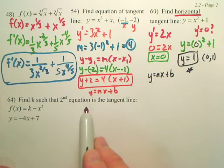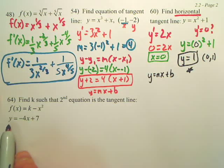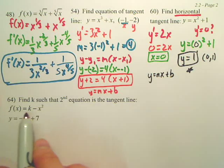Find k such that the second equation is the tangent line, meaning I want this equation to be the tangent line of this equation.